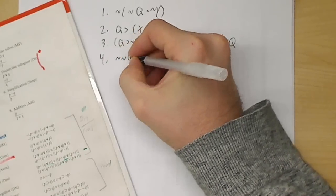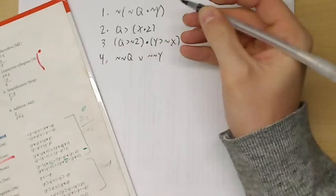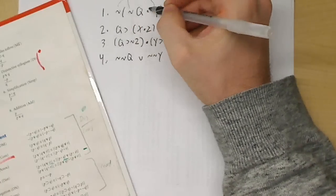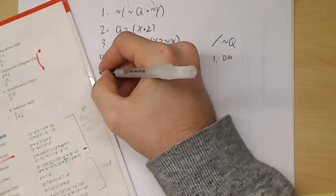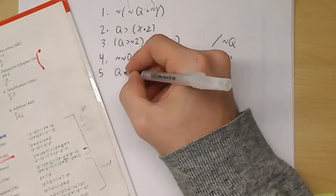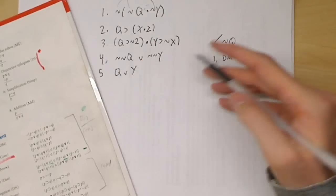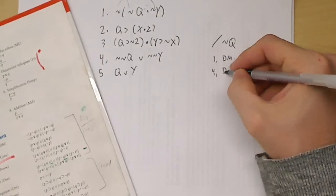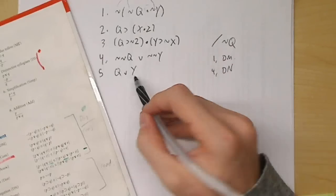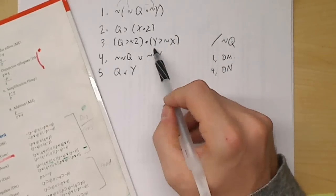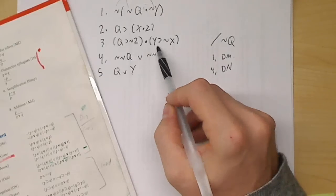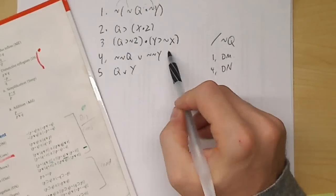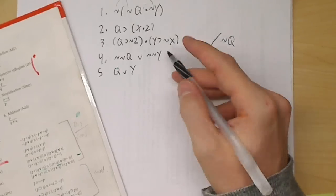If we did DeMorgans on line one, it would come up with ¬(¬Q)∨¬(¬Y), because the negation would go into both. So that would be line one DeMorgans. Then immediately you can do double negations to get rid of the double negations. So now I have Q∨Y — that's line four double negation. I think we are going to have to do a constructive dilemma. Because now that I have Q∨Y, that means I can conclude I must have ¬Z∨¬X.